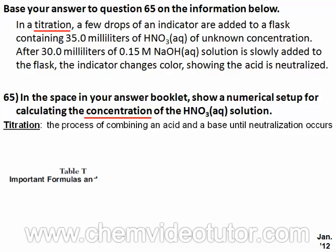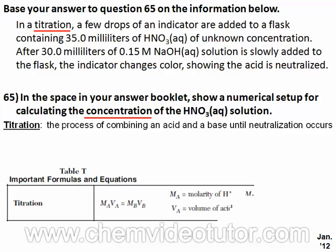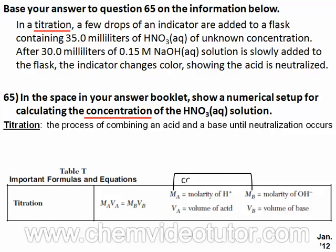Table T of the chemistry reference table has a formula for titrations. This formula has four variables: MA and MB which represent the concentrations of the acid and the base, and VA and VB which represent the volumes of the acid and the base.